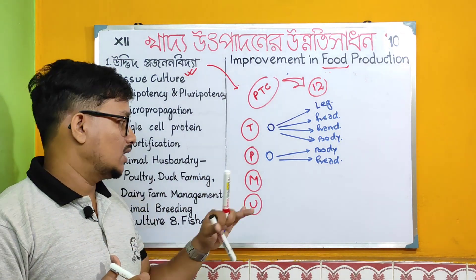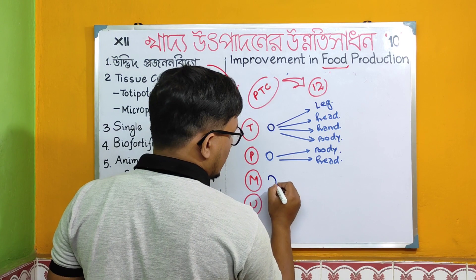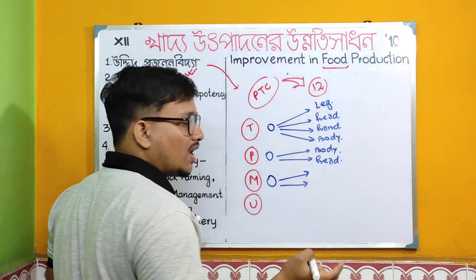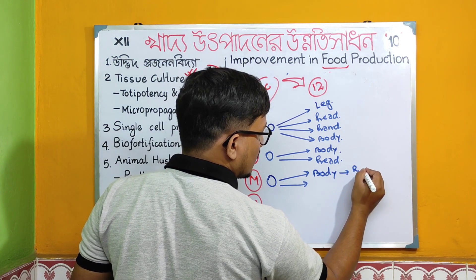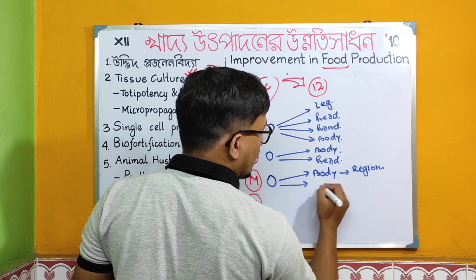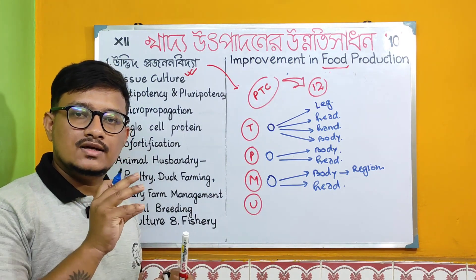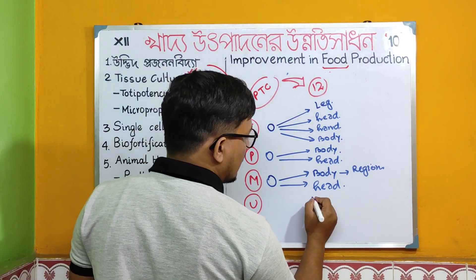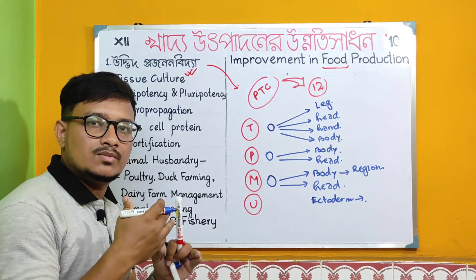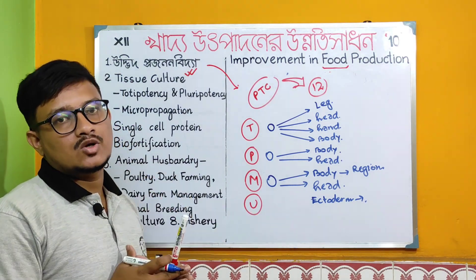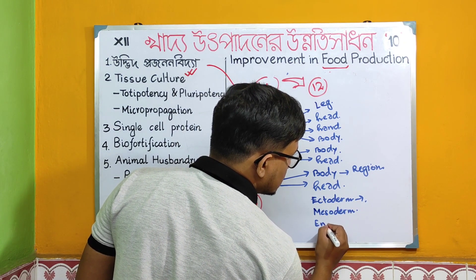Multi-potency means a cell can generate only a single part of the body — a single region of category. Multi means active lineage — different kinds like ectoderm, which gives rise to the upper skin, mesoderm system, and endoderm system.